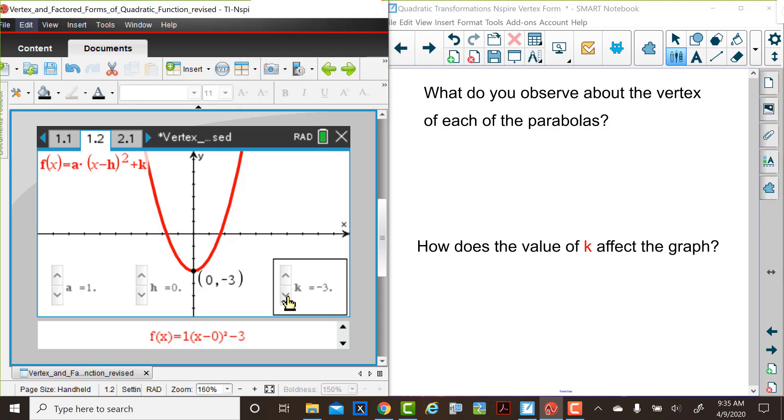When k is increased, we have a vertical translation. The graph moves upward. When k is decreased, we also have a vertical translation, but the graph moves downward. You may have noted that the vertex of the parabola still has an x value of 0, but the y value of the vertex is the value of k. So changes in the value of k, we have this vertical translation, either upwards or downwards. And the vertex is (0, k).